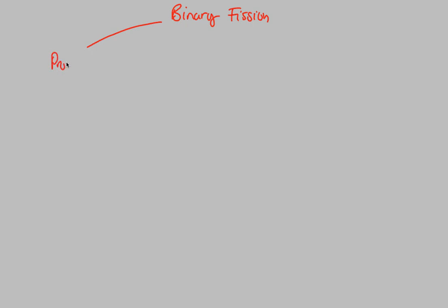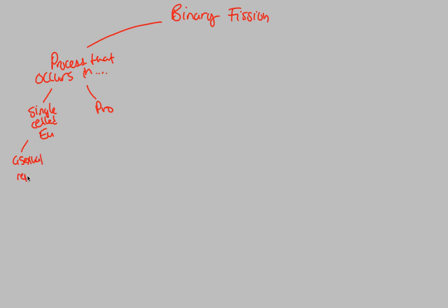Binary fission is a process that occurs in two types of things: single-celled eukaryotes and also prokaryotes. Single-celled eukaryotes are going to undergo binary fission in the form of asexual reproduction. They utilize binary fission in order to reproduce asexually — they do not combine gametes with another single-celled eukaryote. They usually just split themselves apart into two, and this process actually involves parts of mitosis, some mitotic components that create binary fission and asexual reproduction for these single-celled eukaryotes.